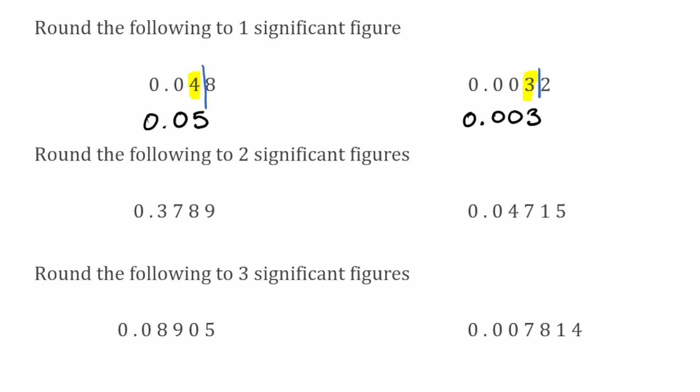For these next examples we want to round to two significant figures. For this first one, three would be my first significant figure meaning seven would be my second. I draw my line straight down, and on the right-hand side of the line we have an eight, so we're going to round up the previous digit — the seven will round up to an eight. Writing underneath: zero point three, and the seven has rounded up to an eight. So that'll be 0.38.